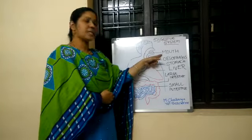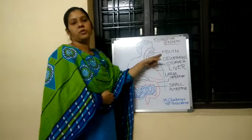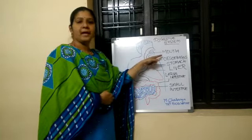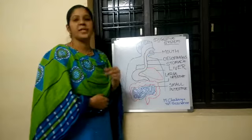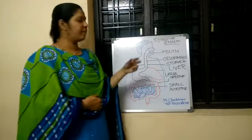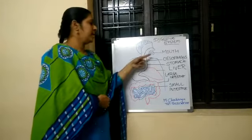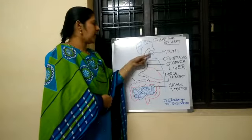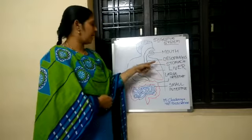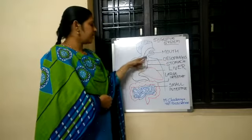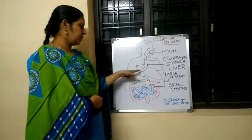Our digestive system starts with the mouth. We take food with the help of the mouth, chew the food, and swallow it. Next, it travels through the esophagus, or the food pipe, which carries it to the stomach.